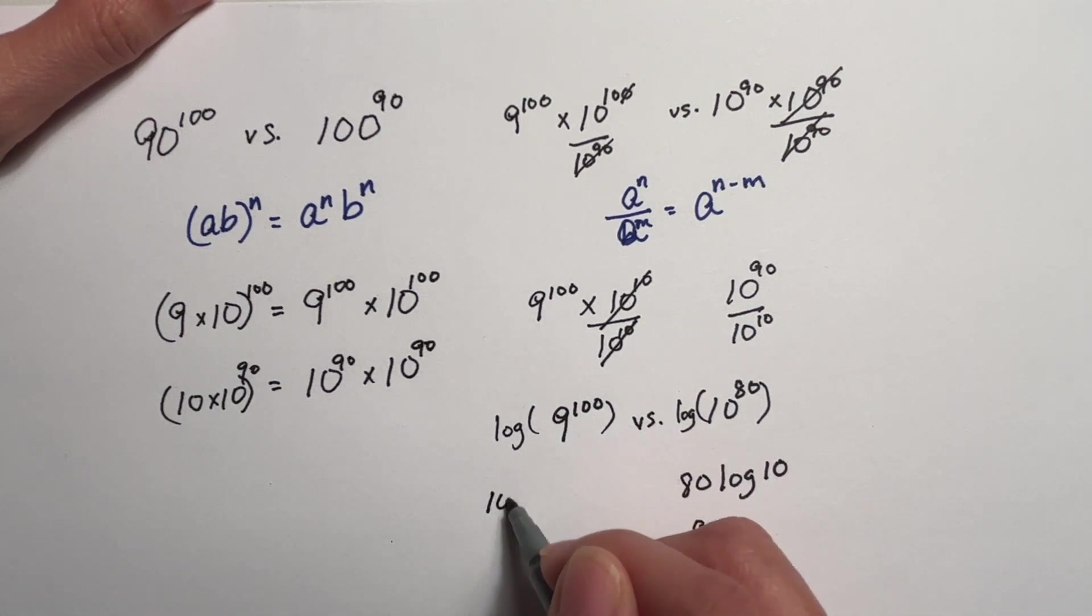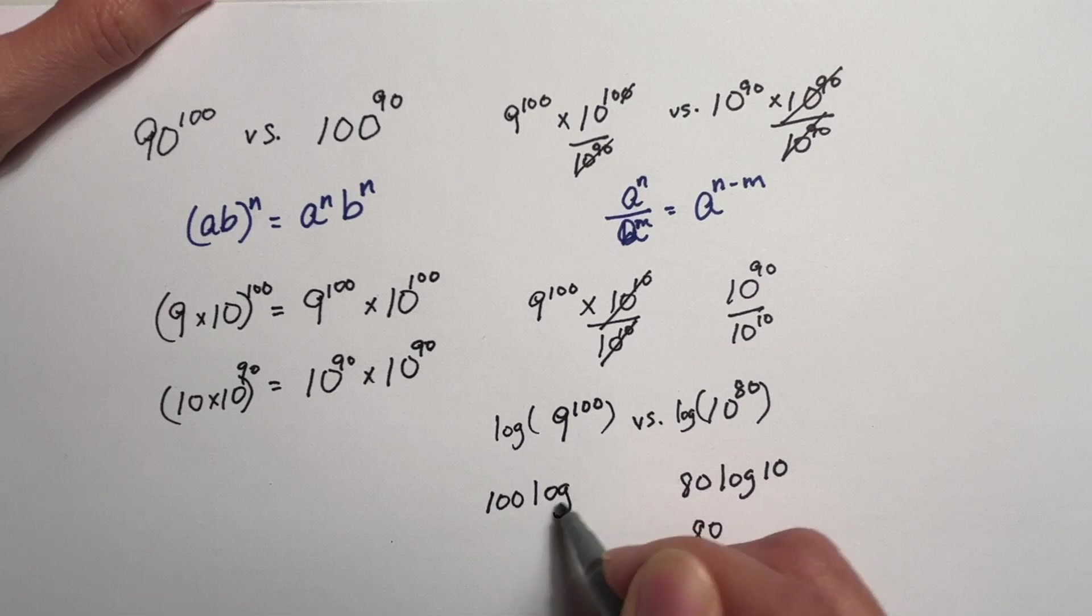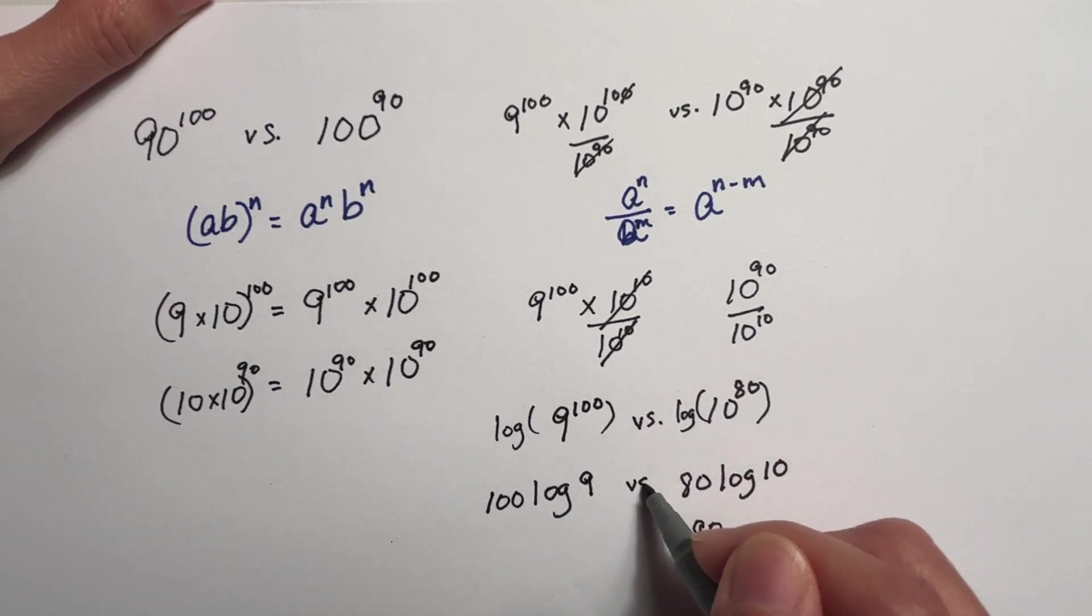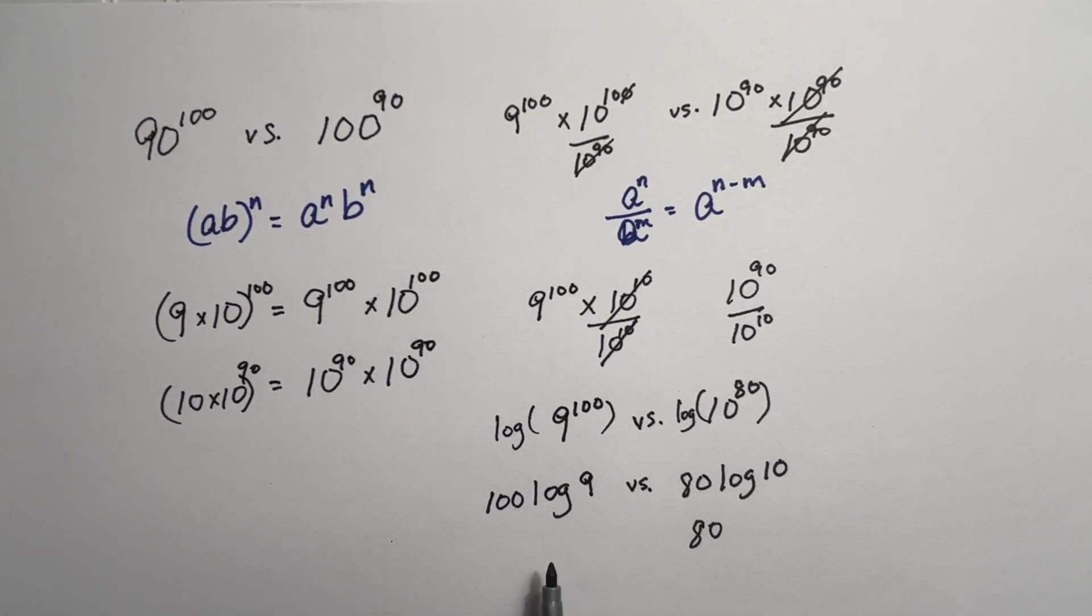Here, this is 100 times the log of 9. If you plug into the calculator, the log of 9 is approximately 0.95. So you can take 100 times 0.95, and this will become approximately 95, which is larger than 80.